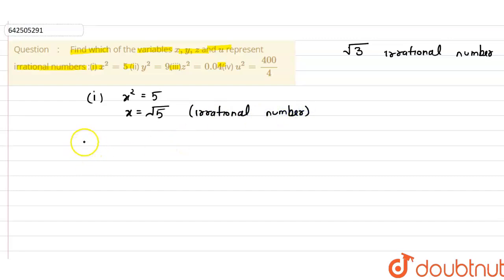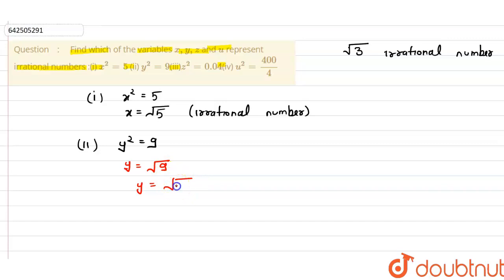The second part is y² = 9. Taking the square root gives y = √9. We can write 9 as 3², so the square root cancels with the square, leaving y = 3. Since 3 is a rational number, and we are looking for which variable represents an irrational number, y is not a rational result we highlight — it is rational, so we note it is not irrational.